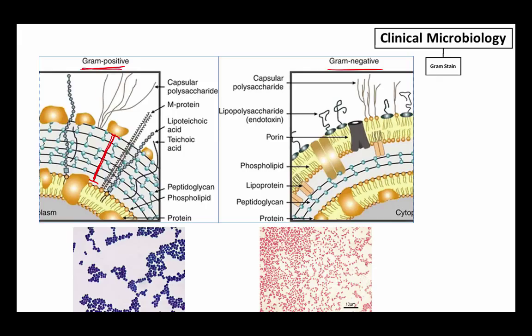There is a stain, a molecule called crystal violet that is exposed to all of the cells during culture. Crystal violet is a larger molecule that when complexed with iodine, which is another step in the staining process, creates these large complexes that become trapped within Gram-positive cells because of this thick peptidoglycan layer.